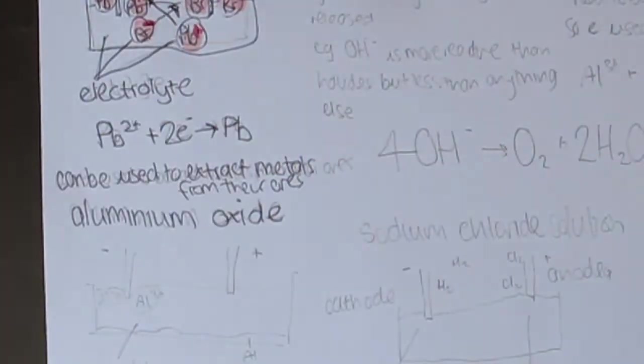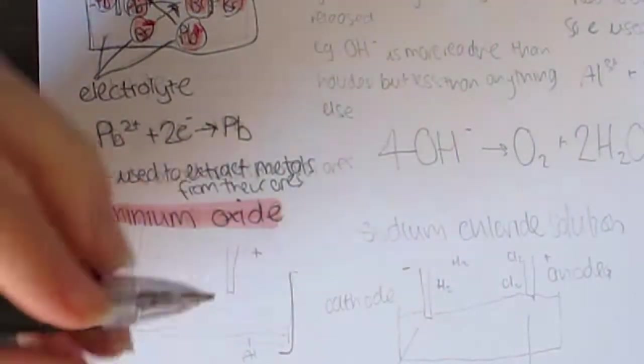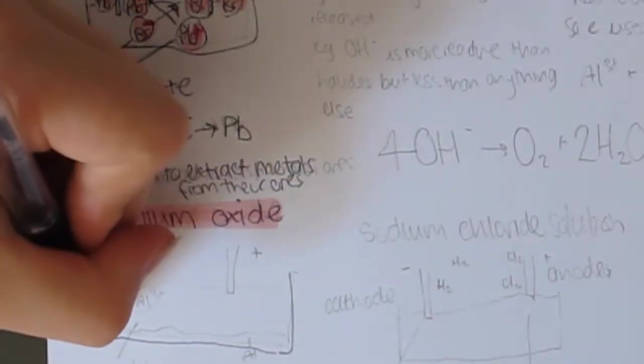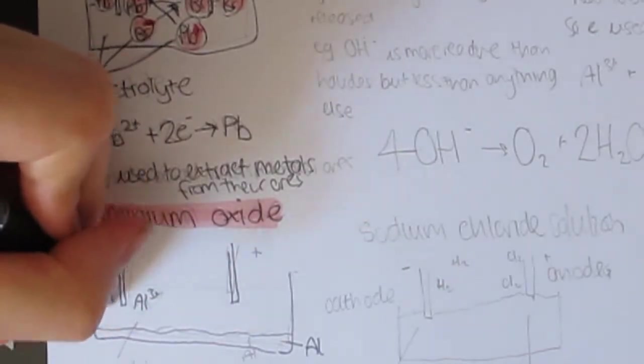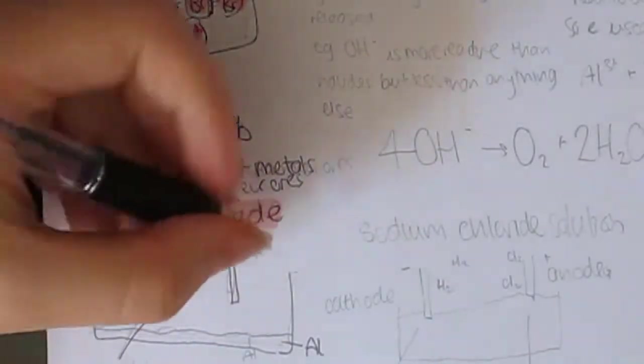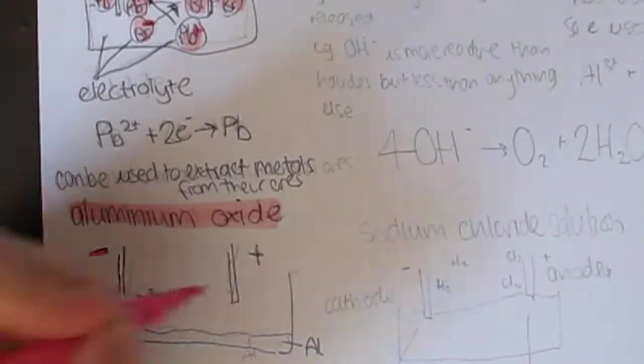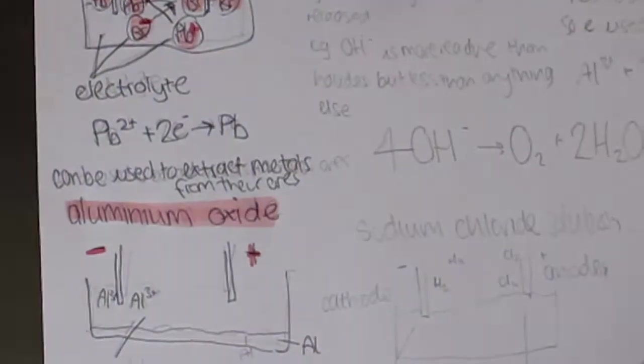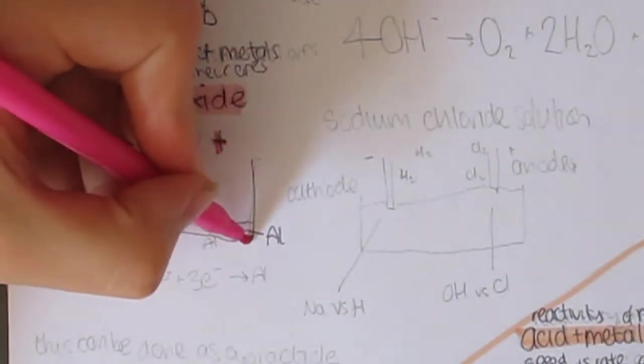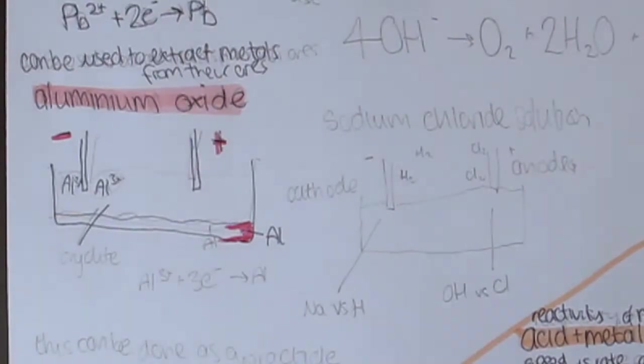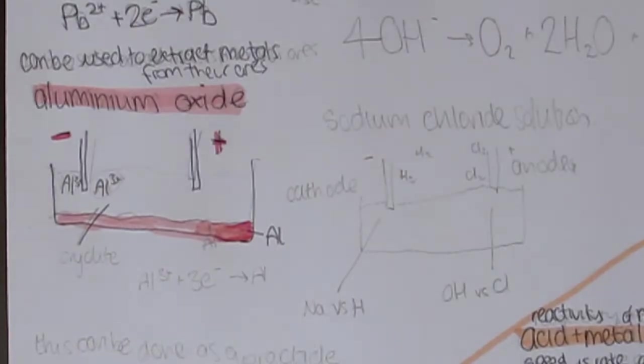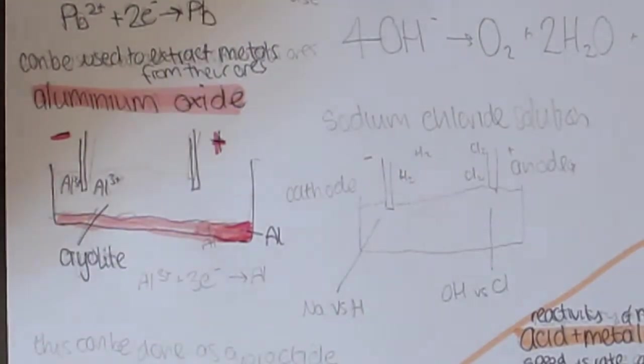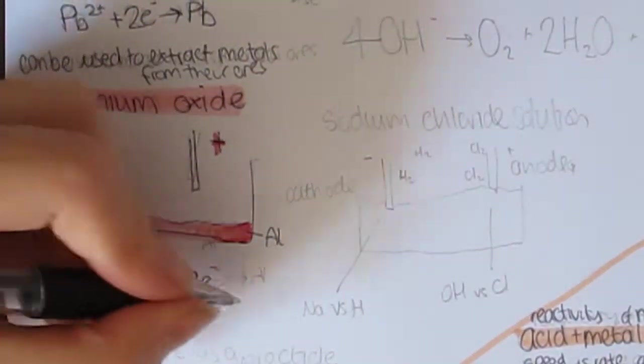Metals more reactive than carbon can be extracted from their ores using electrolysis. For example, aluminium from aluminium oxide, which is mixed with cryolite to lower the melting point, is then made molten and the aluminium ions go to the negative electrode. They pick up spare electrons and become solid, going to the bottom of the tank. The half equation for this is Al3+ plus 3e- makes Al. It is important to find out how to make half equations, so I will leave a worksheet attached below with more details.